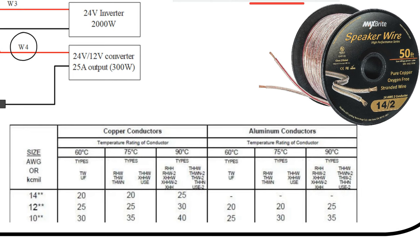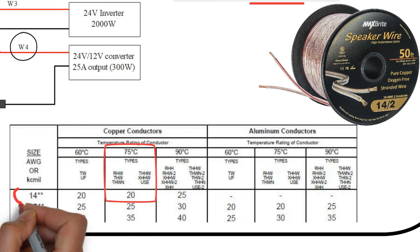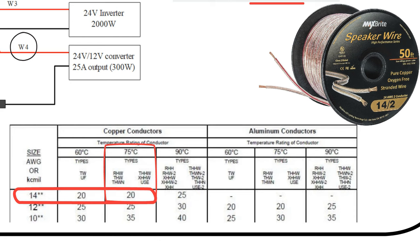Looking at the NEC ampacity ratings for conductors rated from 60 to 90 degrees Celsius, we can see that a 14 gauge wire, rated at 75 degrees Celsius, will fit our system. This wire is called speaker wire, used in automotive audio systems, but we can still use it for our system.